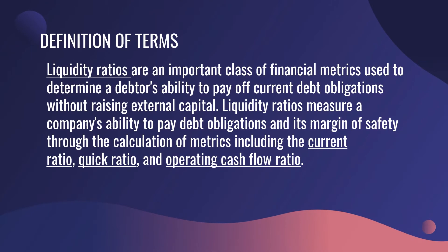Liquidity ratios are an important class of financial metrics used to determine a debtor's ability to pay off current debt obligations without raising external capital. Liquidity ratios measure a company's ability to pay debt obligations and its margin of safety through calculation of metrics including the current ratio, quick ratio, and operating cash flow ratio. Liquidity ratios determine a company's ability to cover short-term obligations and cash flows, while solvency ratios are concerned with a longer-term ability to pay ongoing debts.